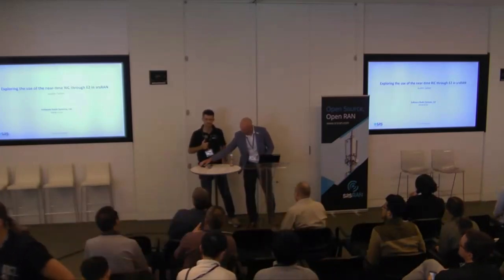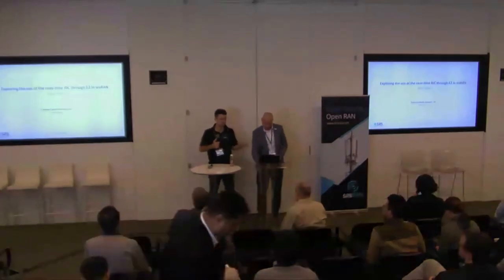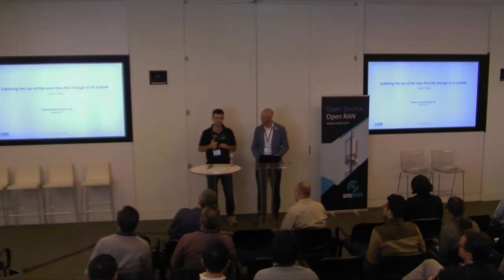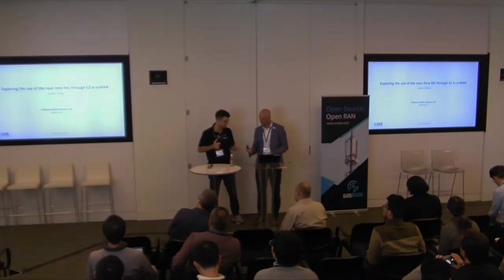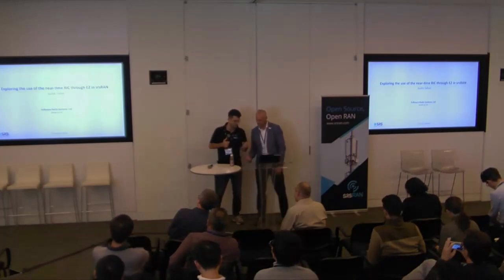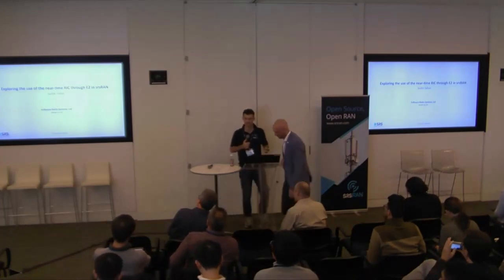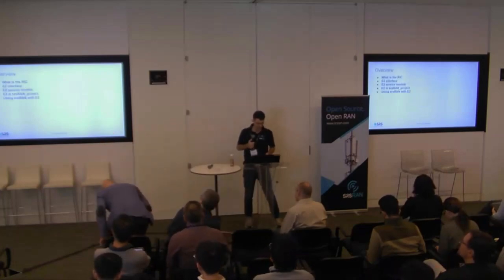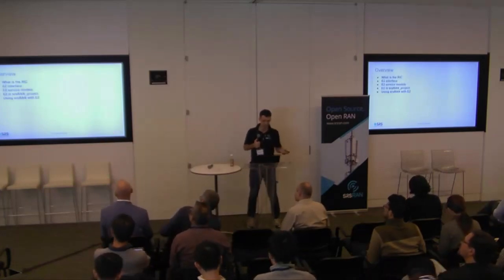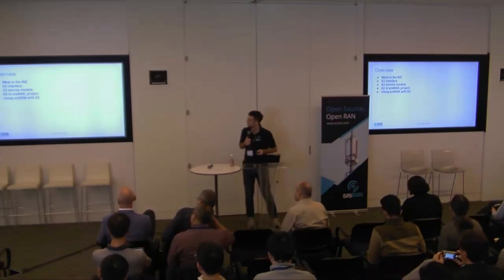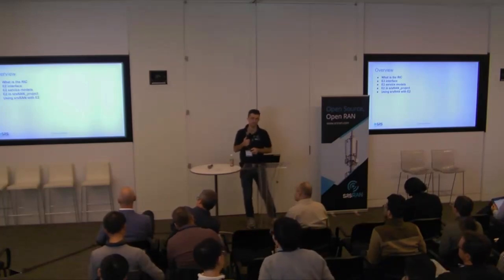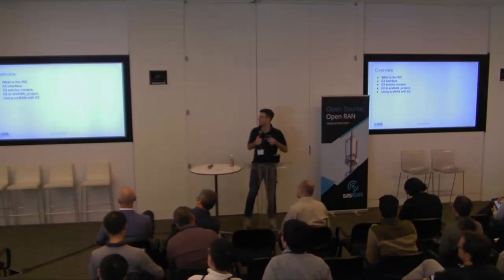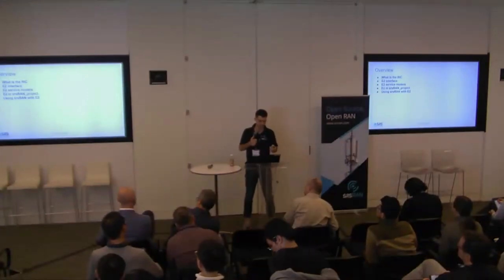When I originally prepared this presentation, I put in a lot of introductory stuff just to set the scene about the E2 and the RIC in general. But after the conversations I've been having all across the morning here, I realized that a lot of you know a lot about the RIC and the E2. I'm going to start off with the basics, then go through briefly what a RIC is, what an E2 interface is, the E2 service models, and then how the E2 is implemented in SRS RAN and how you can go about using it in our software.